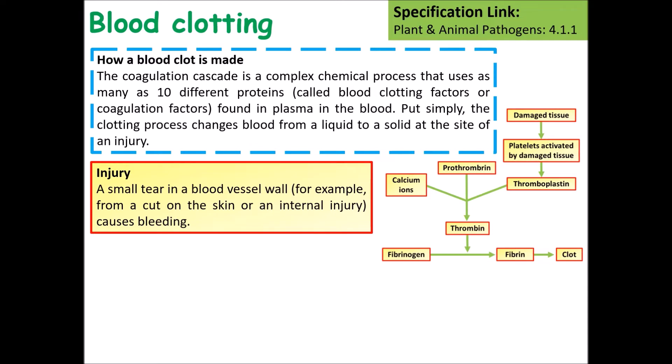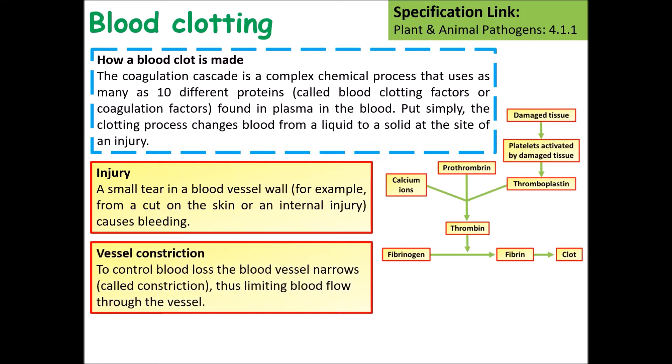The process starts with an injury — a small tear in the blood vessel wall — that causes bleeding. That then leads to a constriction of that blood vessel to help control blood loss, so the vessels around it narrow, limiting the amount of blood flowing to that area.